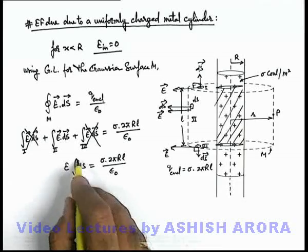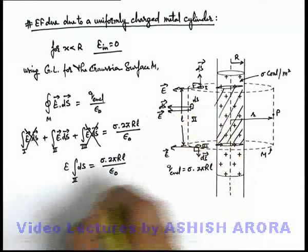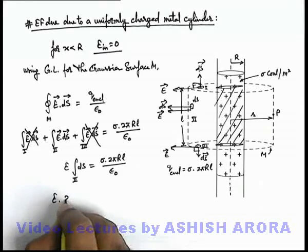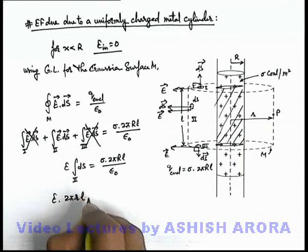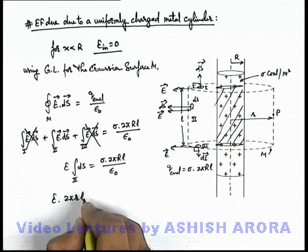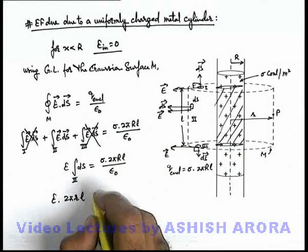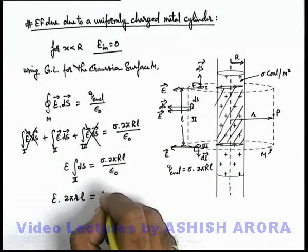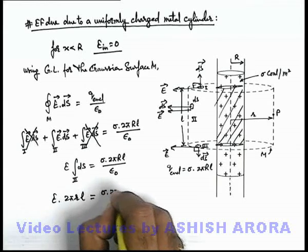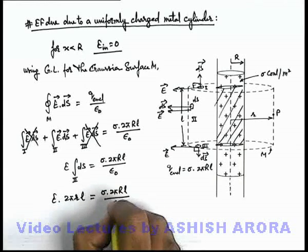The total integral of the elemental area dS for the lateral surface can be written as 2πrl, where small r is the distance of point P or the radius of the cylindrical Gaussian surface. It equals sigma times 2πRl by epsilon not.